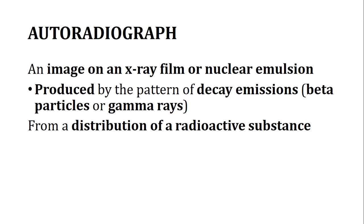The X-ray film captures the decay emission pattern — beta particles or gamma rays coming from the sample — and it shows the distribution of radioactive substances within the sample.